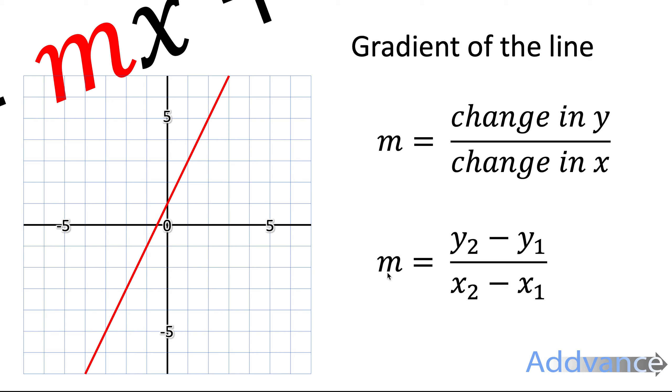And the other equation is m equals, the gradient is equal to, the second y coordinate minus the first y coordinate over the second x coordinate minus the first x coordinate.